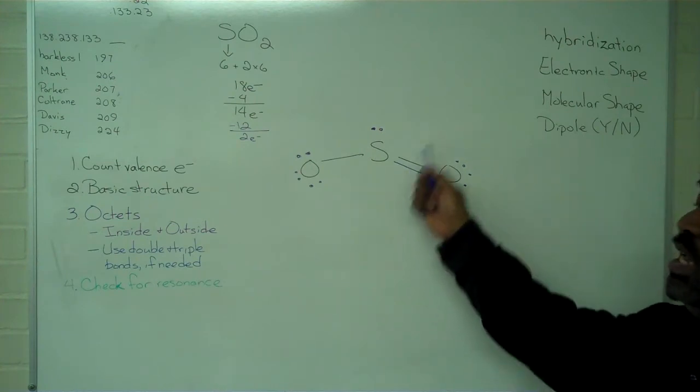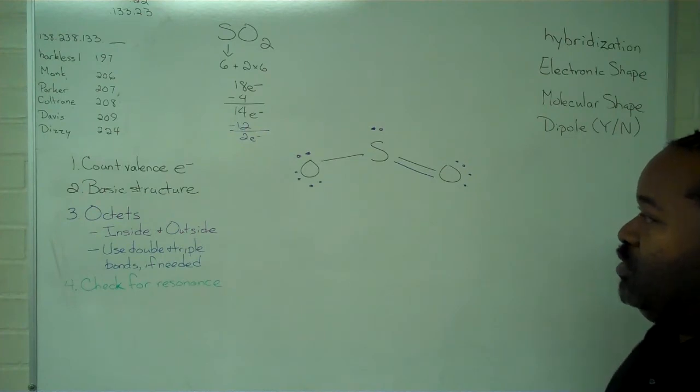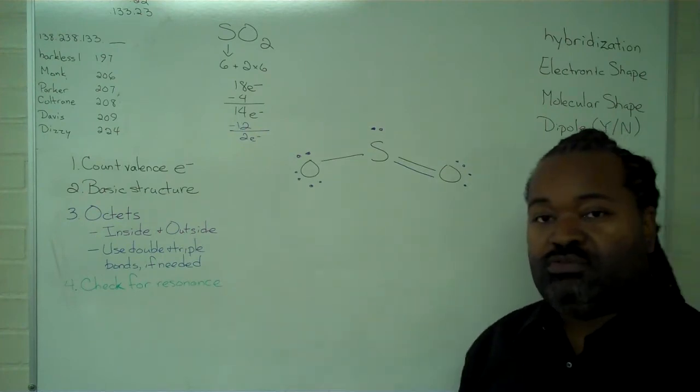Now, we can see that the oxygen has 8, this oxygen has 8, and the sulfur also has 8. And so we're done with the basic structure.